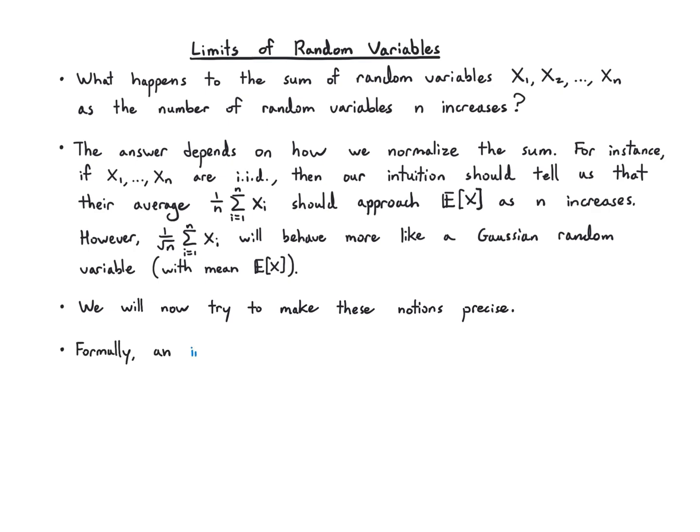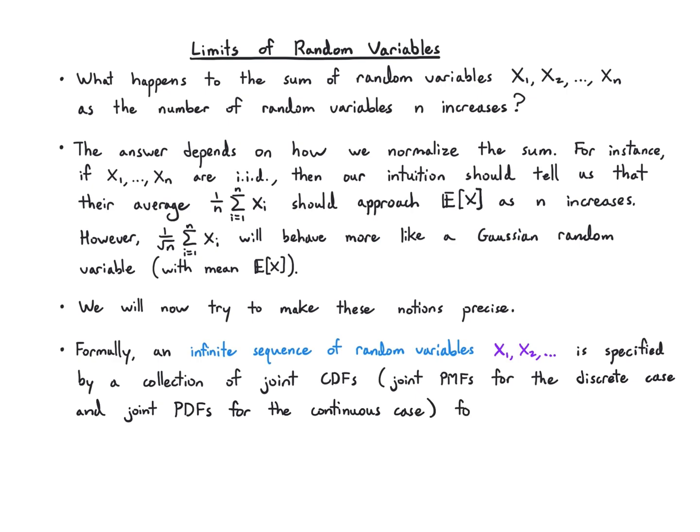One formal addition we need to our framework is that an infinite sequence of random variables is specified by a collection of joint CDFs, which are joint PMFs in the discrete case, and they lead to joint PDFs in the continuous case. We're going to have a collection for every possible finite subset of random variables. So any collection of random variables you pick up, they have a joint PMF or joint PDF.